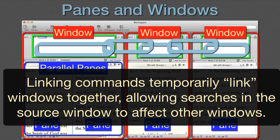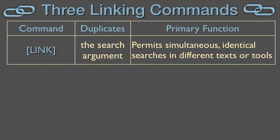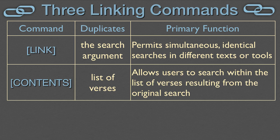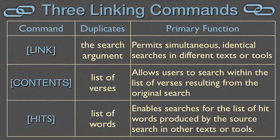Linking commands temporarily link zones or tabs together, allowing searches in the source window to affect other windows. These powerful commands allow simultaneous searches, searches within searches, and cascading searches in multiple windows. The three linking commands join or link the searches between two or more zones in different ways. The Simple Link command duplicates the search argument from the source window in other windows, permitting simultaneous identical searches in different texts or tools. The Contents command duplicates the list of verses from the source zone, allowing users to search within the list of verses resulting from the original search, usually with the use of the AND command. The Hits command duplicates the list of hit words from the source window, enabling searches for them in other texts or tools.